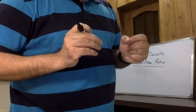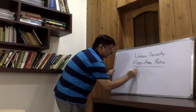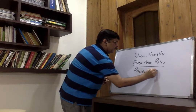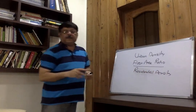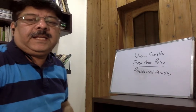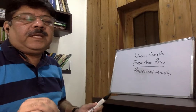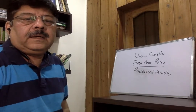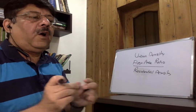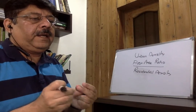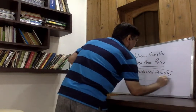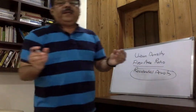Then there is residential density — the number of houses, or dwelling units. Residential density is the number of dwelling units in any given area. How many dwelling units are there in any given area — in any square kilometer or hectare? That is called residential density.